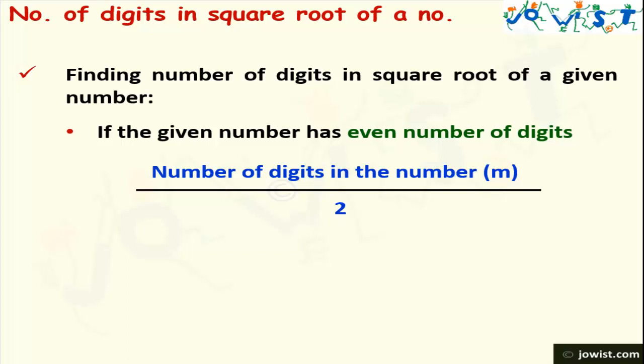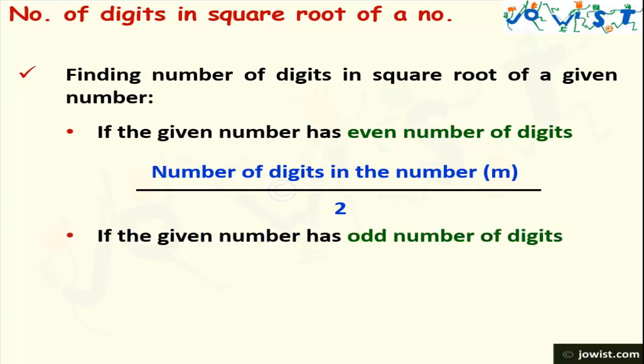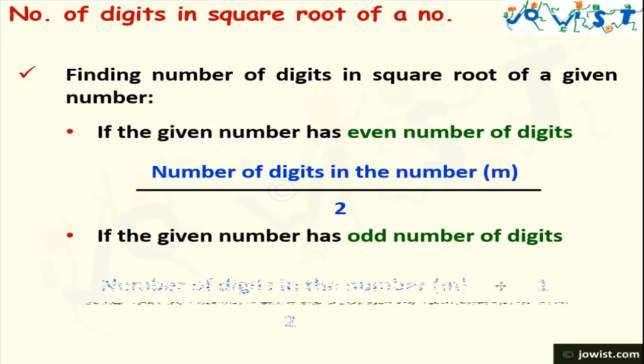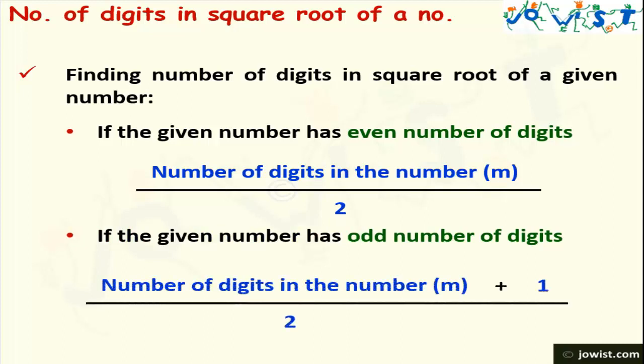What about odd numbers? If the given number has an odd number of digits, then the formula for finding it will be (m + 1) / 2. Here again, m represents the number of digits in the given number.